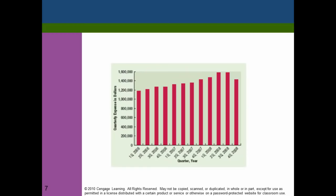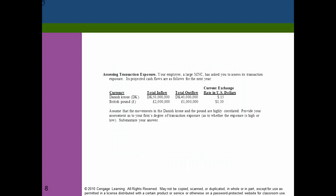This graph illustrates why exposure matters. Suppose your company has to make a payment of 1 million euros every quarter. In Q1 2006 the exchange rate was 1.2, so the payment was 1.2 million dollars. By Q3 2007 it rose to 1.4, and it went to nearly 1.6 in 2008. The payment in euros stays the same, but because of exchange rate changes, the actual dollar amount moves substantially over time.